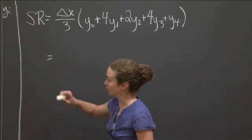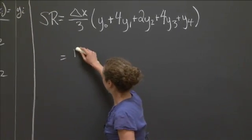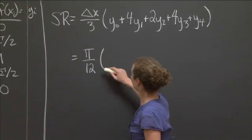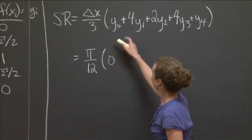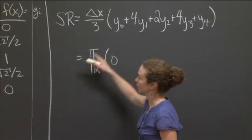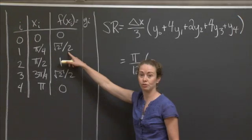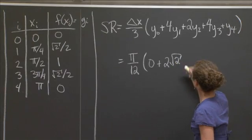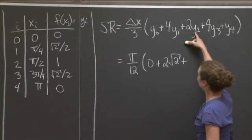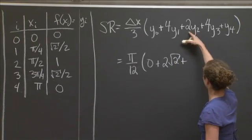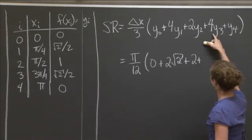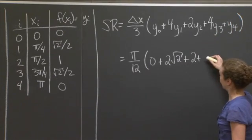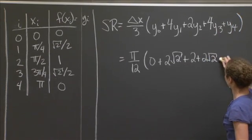So let's fill in what we have. Well, delta x is pi over 4, so I get pi over 4 times 1 third, so I get pi over 12. y0 is, again, 0. y1, come back here, it was root 2 over 2. root 2 over 2 times 4 is 2 root 2. y2, if you remember, was 1, so I get 2 times 1 is 2. And then I have the same two values, because this is symmetric about the y2 value. So I get another 2 root 2 and another 0.